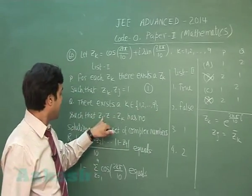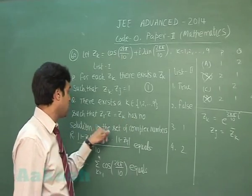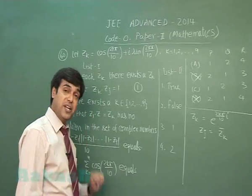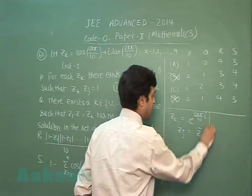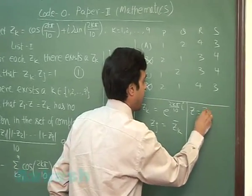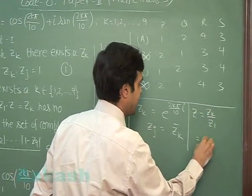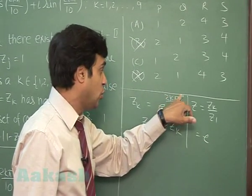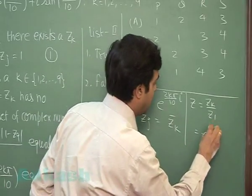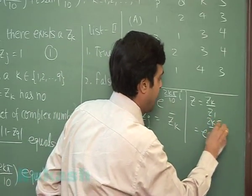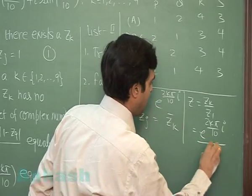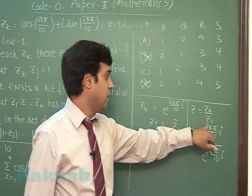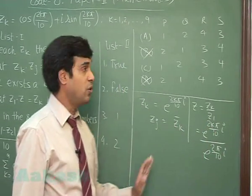Q will definitely have answer as 2. Let's check it out. There exists a k from 1 to 9 such that product z1 into z equals zk has no solution in the set of complex numbers. z will be equal to zk upon z1, that is e 2k pi by 10 upon for 1 we find 2 pi by 10. e raised to the power 2k pi by 10 iota upon e to the power 2 pi by 10 iota. For different values of k from 1 to 9, clearly we get a solution, so it is false as we observed it must be the same one.